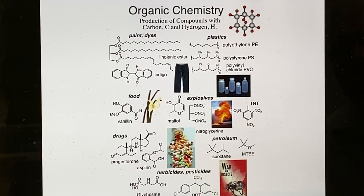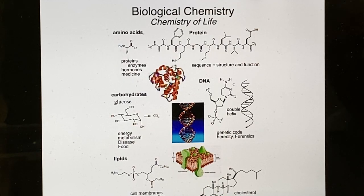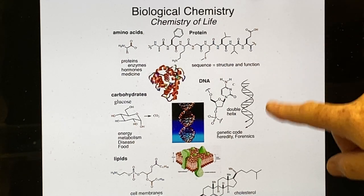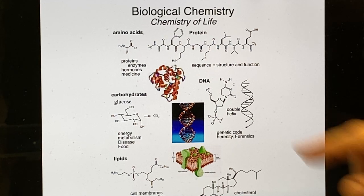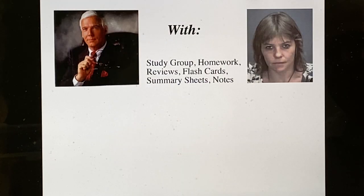OCHEM is a broad area. Applications include explosive materials, drugs, petroleum and energy, paints and dyes, plastics, food, herbicides, pesticides, and many others. Biological chemistry studies subclasses of compounds with repeating structures like polyamides in proteins, polynucleic acids — A, T, G, and C — in DNA and RNA, carbohydrates, and lipids. Analytical chemistry — including spectroscopy, NMR (nuclear magnetic resonance), mass spectrometry, and IR — will also be part of this course.